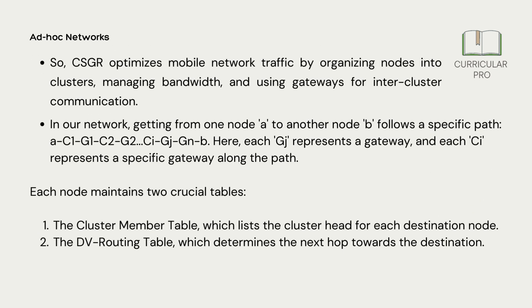So, CSGR optimizes mobile network traffic by organizing nodes into clusters, managing bandwidth, and using gateways for inter-cluster communication.